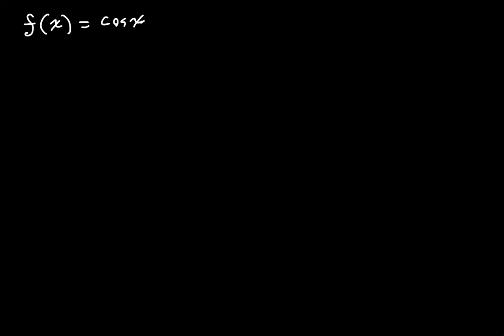Just like in the last video, the one trick that we'll be using to evaluate this is this limit here: the limit of sine of x over x — most commonly written as lim — the limit of sine of x over x as x goes to zero is equal to one. This is a law or theorem, or just a good limit to know. It can be proved using calculus later on, but for the sake of this video I'm not going to get into that. That's just a given.